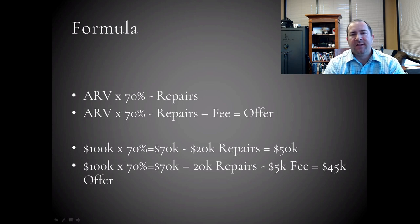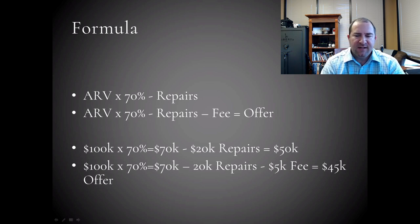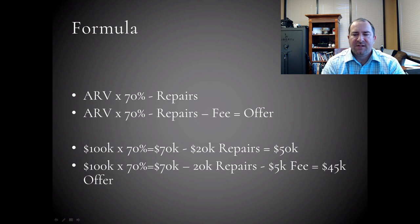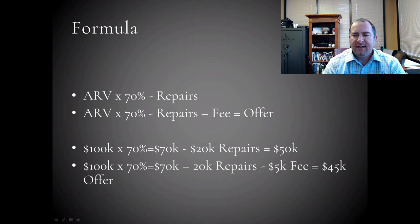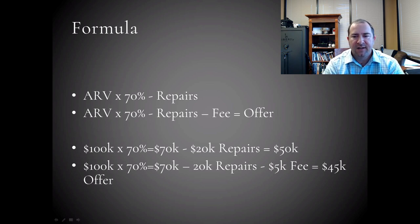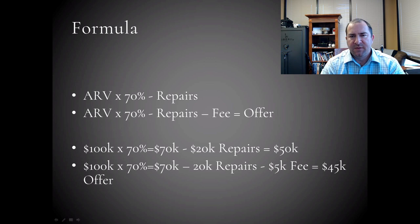Looking at an example: using a $100,000 ARV, $100,000 times 70% gives you $70,000. Subtract an estimated $20,000 renovation repair, and that $50,000 represents what your buyer could pay for the house — meaning you need to get it lower. Taking it one step further, you add in your fee of, say, $5,000. So you'd need to offer $45,000 on this property and get it under contract, assuming all these numbers are accurate.